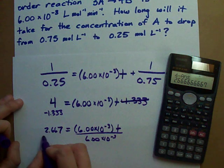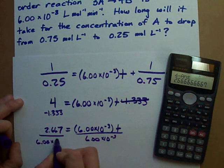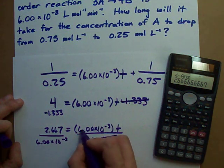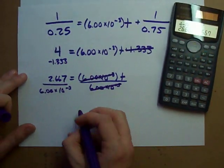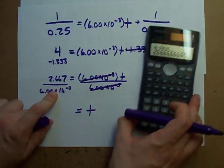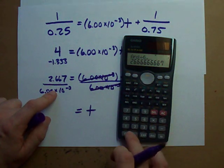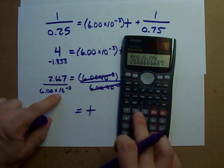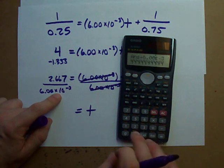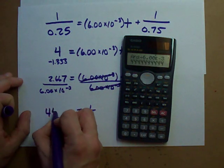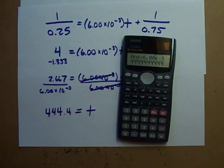Divide both sides by 6.00 times 10 to the negative 3. They'll cancel each other out here. And I'm left with 2.6667 divided by 6.00 times 10 to the power of negative 3. I get 444.444 seconds.